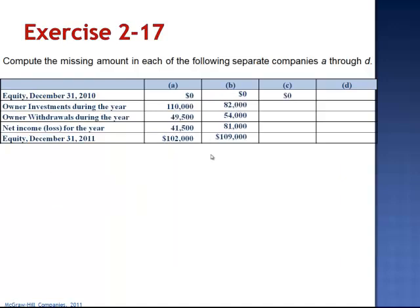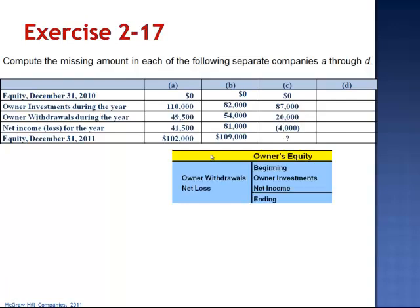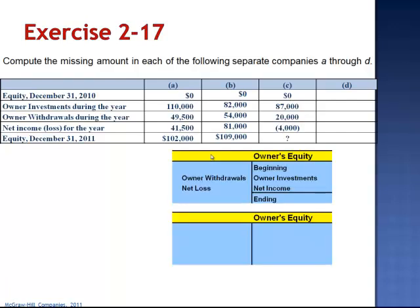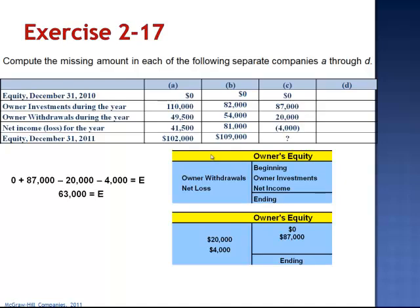Company C. Beginning equity is zero. Owner investments are $87,000. The owner withdrew $20,000 in the current year and sustained a net loss of $4,000. We're asked to calculate the ending equity balance. Zero plus $87,000 — we don't have net income because we had a net loss — minus $20,000 in withdrawals and $4,000 in losses gives us zero plus $87,000 minus $24,000. Ending equity balance is $63,000.